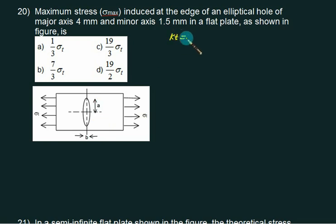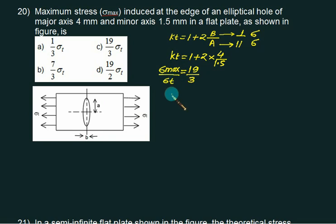So we have KT equals to, our formula is 1 plus 2 times B divided by A. What is B? A is perpendicular to direction of stress. This one is parallel to stress. So we have KT equals to 1 plus 2 times B. What is this whole value? Is it 4? Is it directly given, no? Major axis. Is semi-major given or major is given? So if this value is multiplied by 4, 4, divided by this value, minor axis, 1.5. 19 by. And this value is same as sigma max divided by sigma T. So what is the value of sigma max? This is 19 by 3 sigma of T.